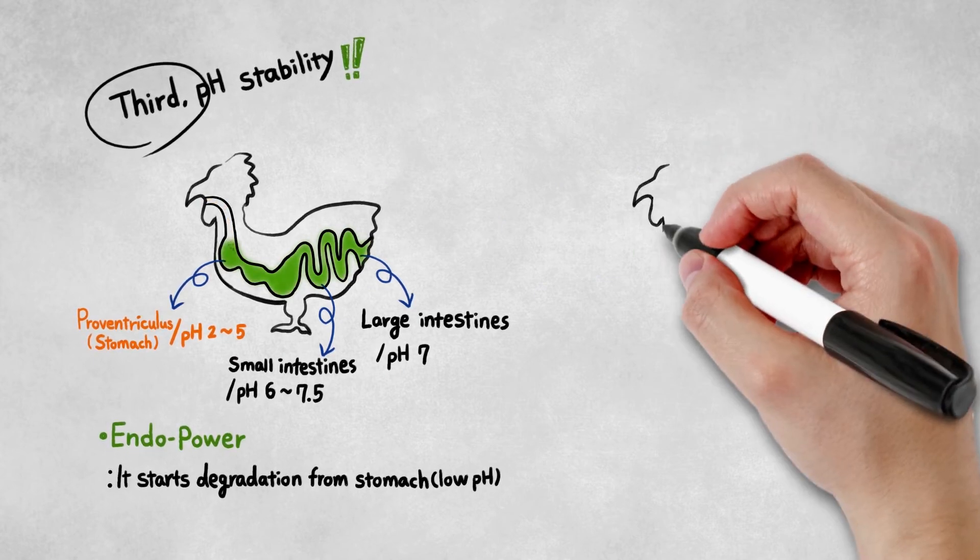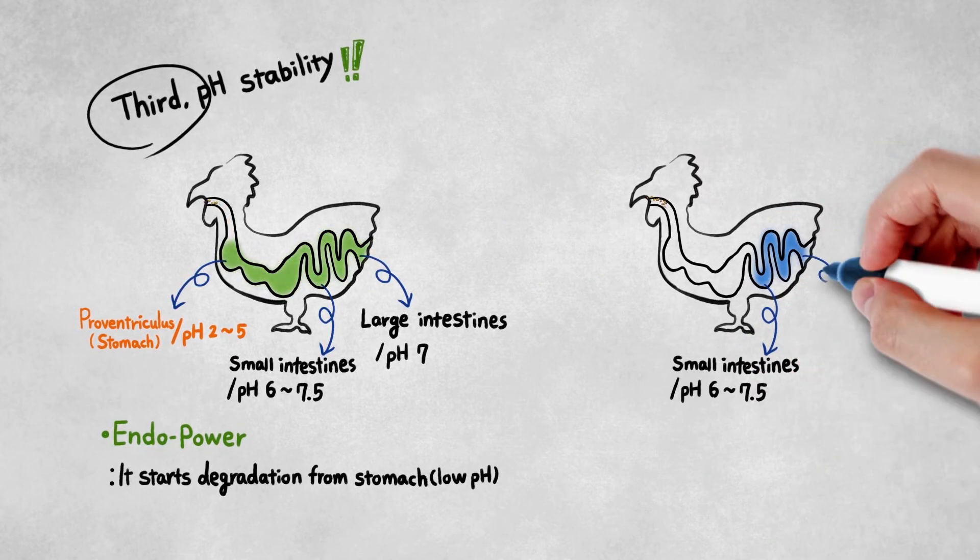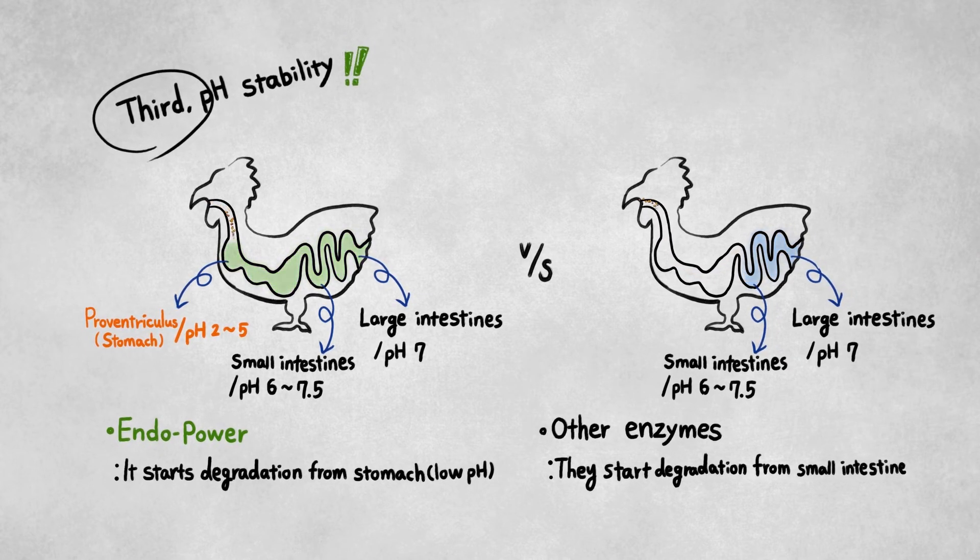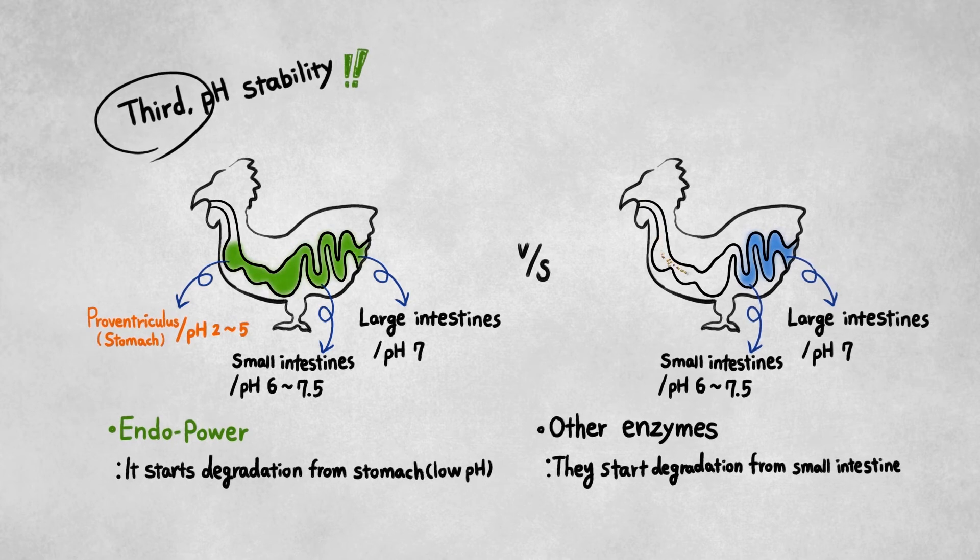EndoPower is stable and active across a broad pH range in the gastrointestinal tract. This means EndoPower can work even in the stomach, which improves nutritional availability.